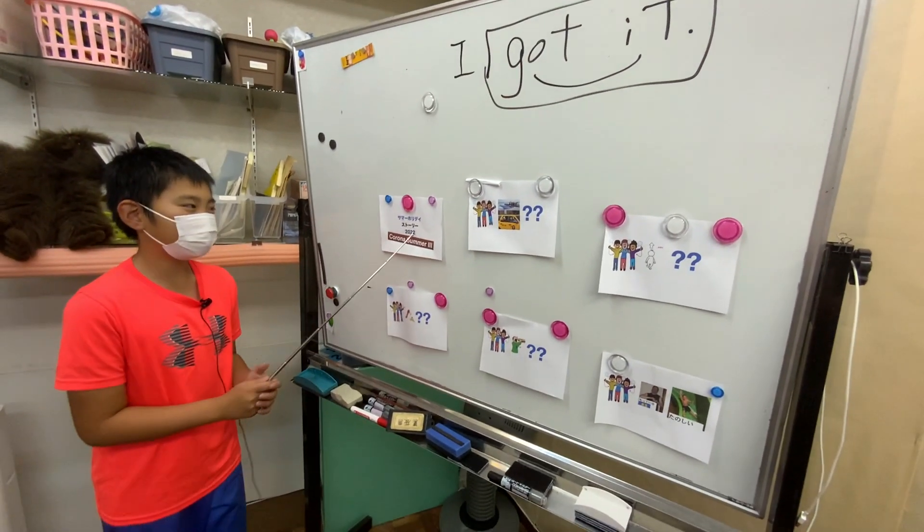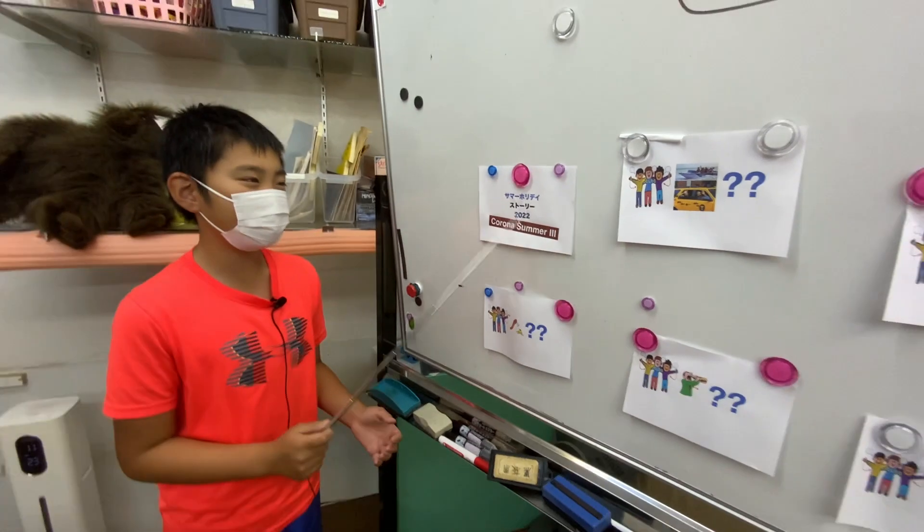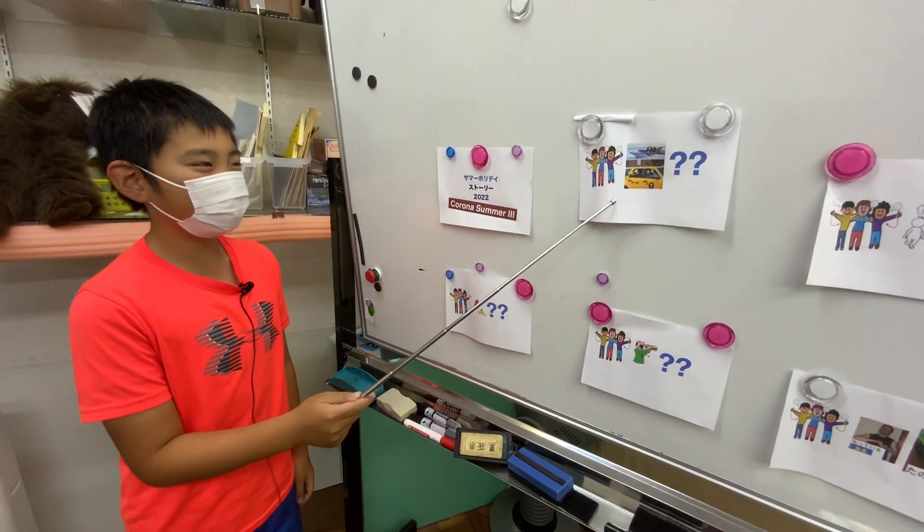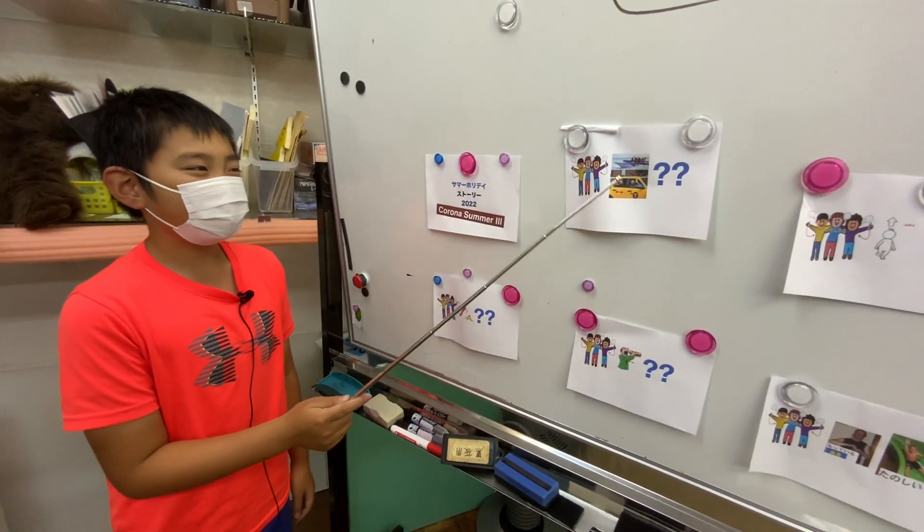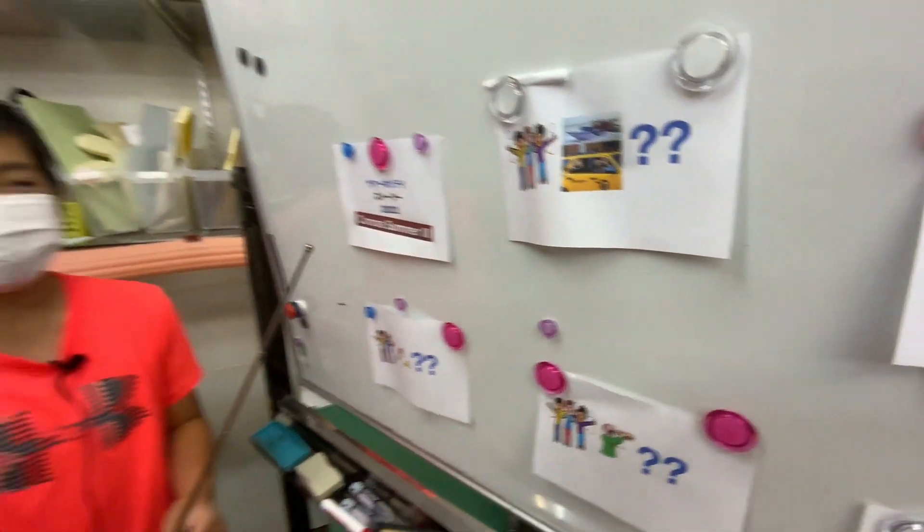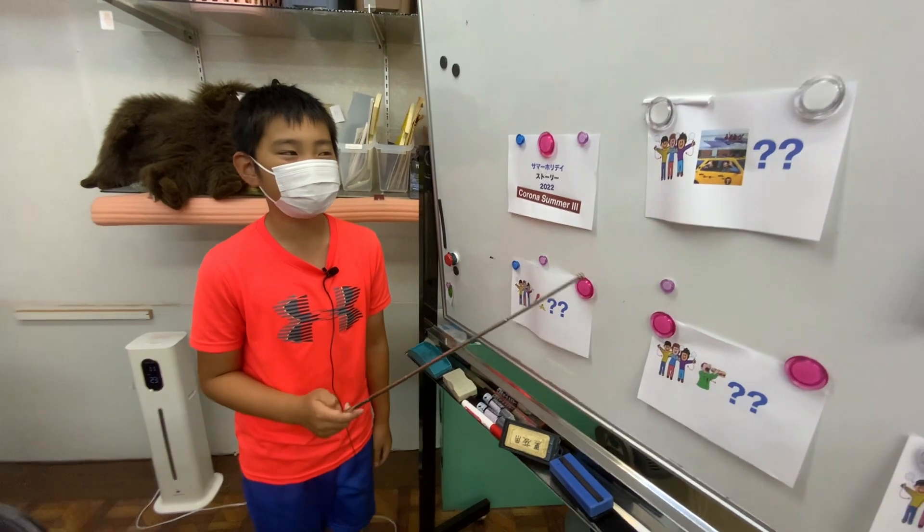What's this? Summer holiday story 2022. Father, mother, big brother, and I, we ride a car. You ride a car? You ride a yellow car? No. What color is it? Black.